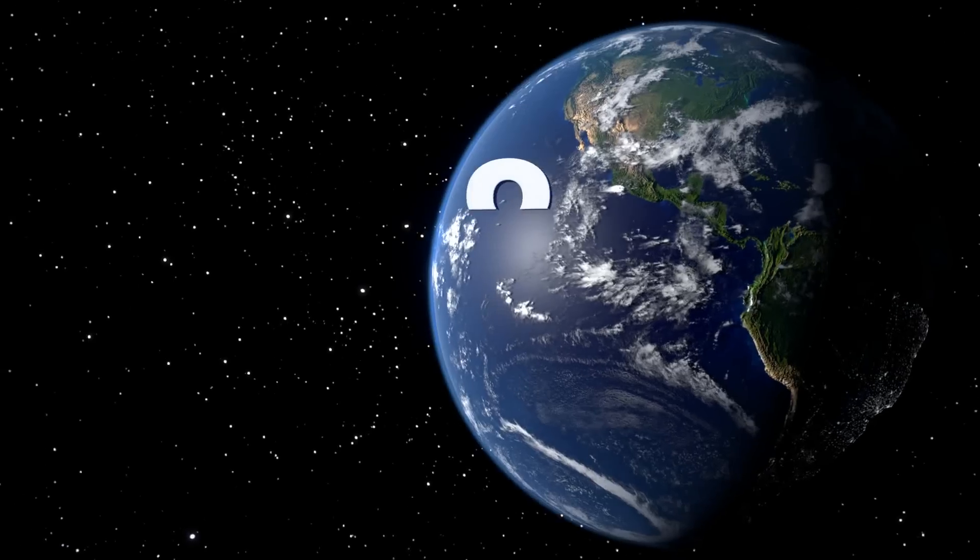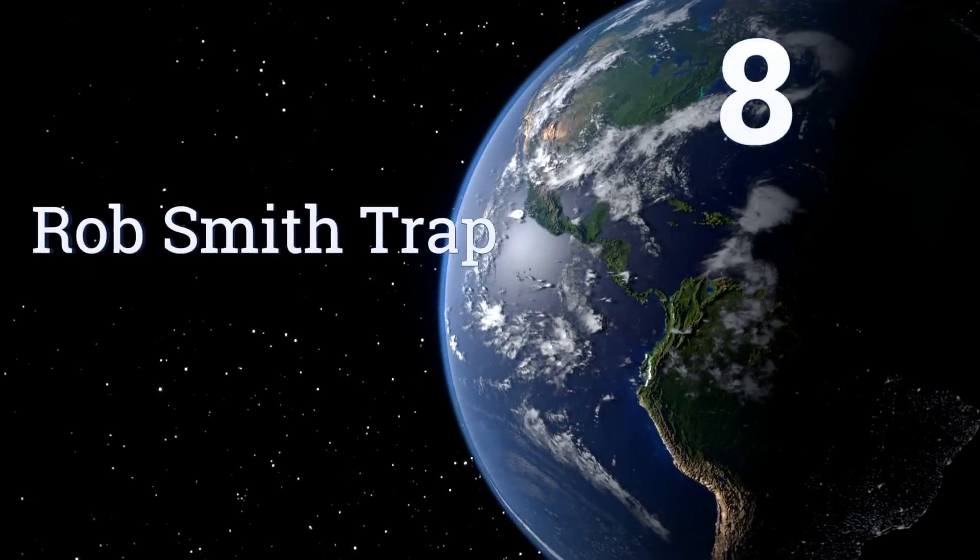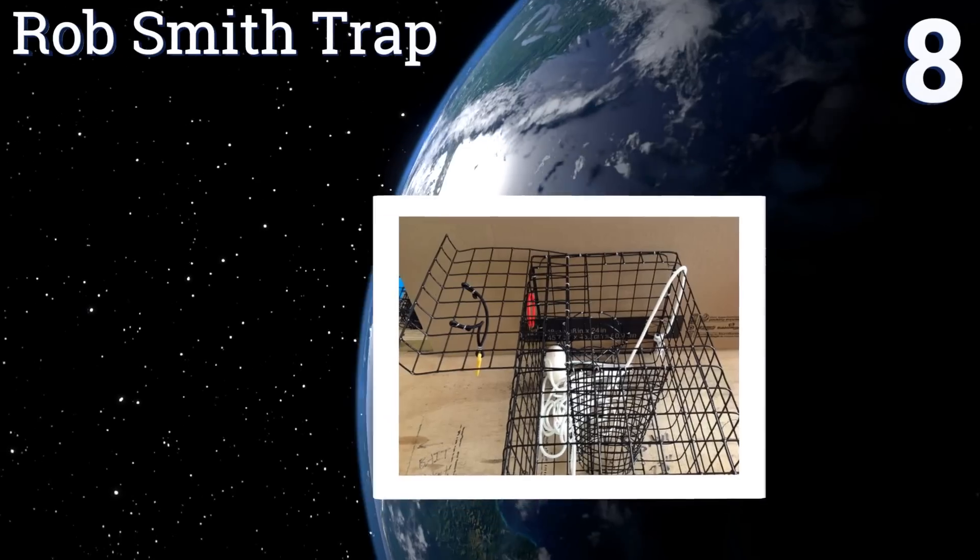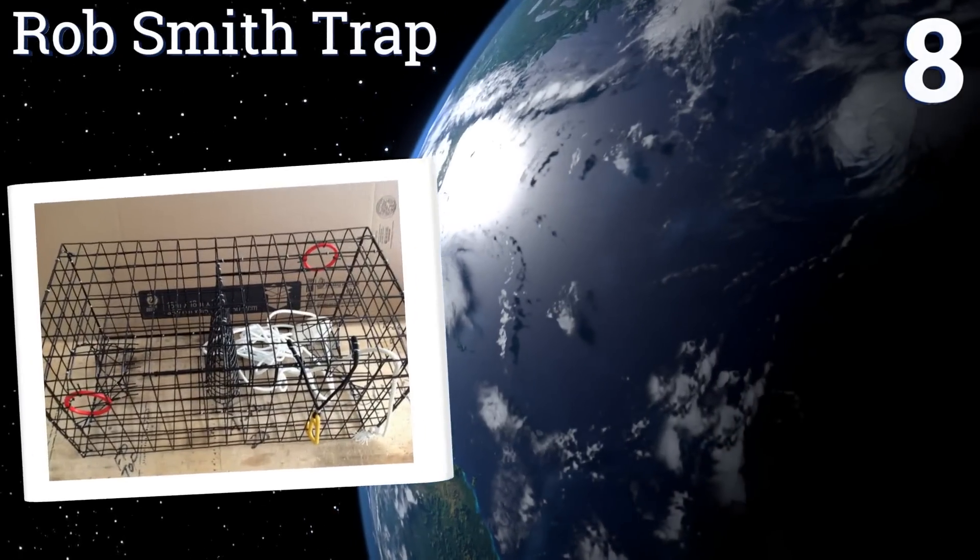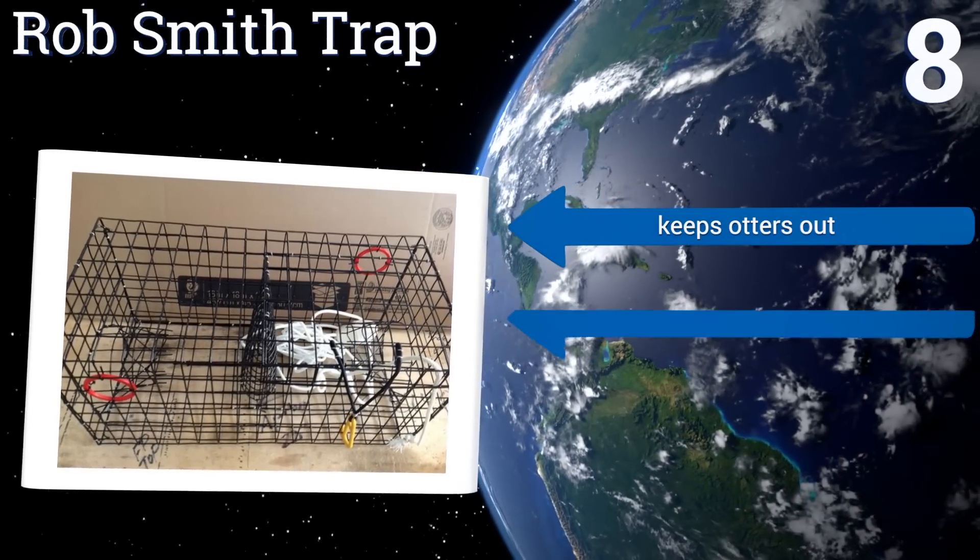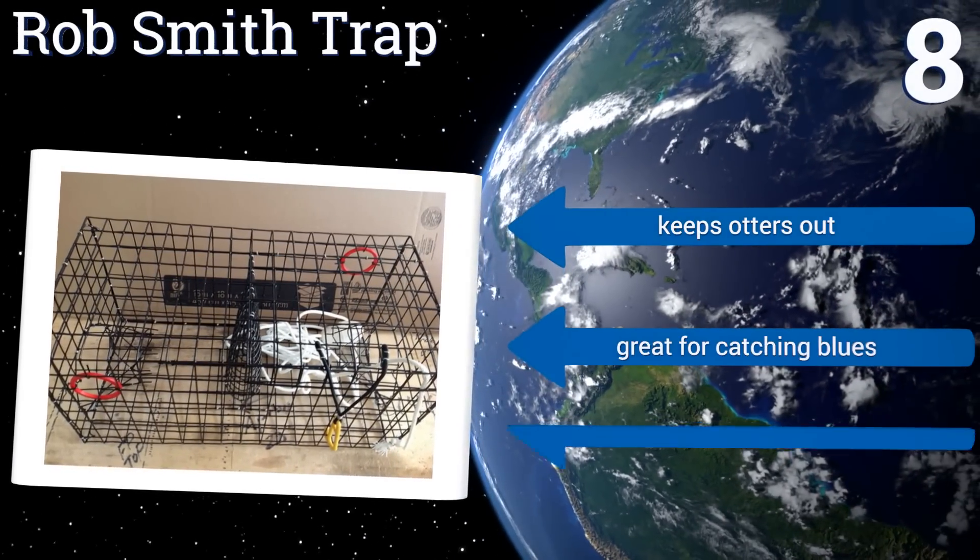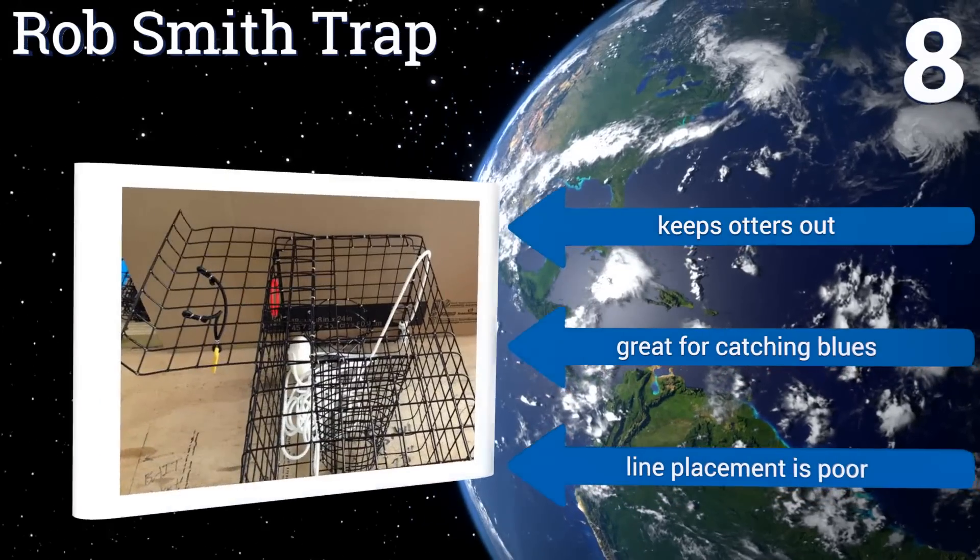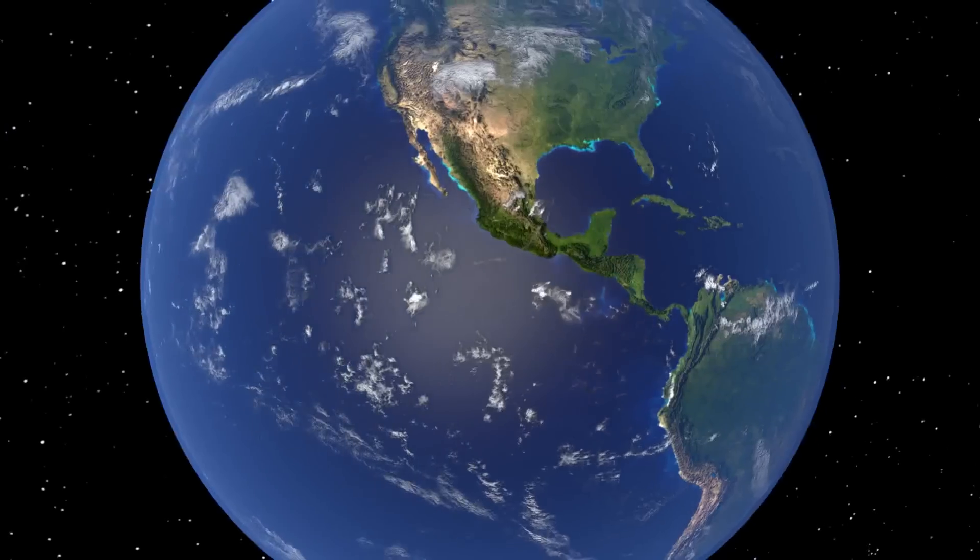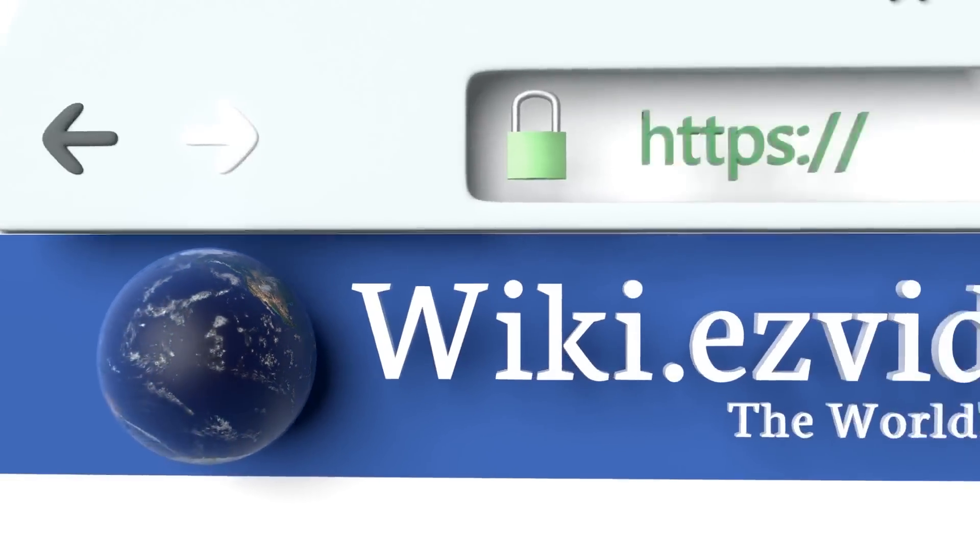Coming in at number eight on our list, this PVC coated offering from Rob Smith's trap will stick around for a long time as it won't rust. The welds are very clean with no sharp edges to worry about. Some users say that it doesn't keep the crabs inside very well though. It does keep otters out and is great for catching blues, however the line placement is poor.